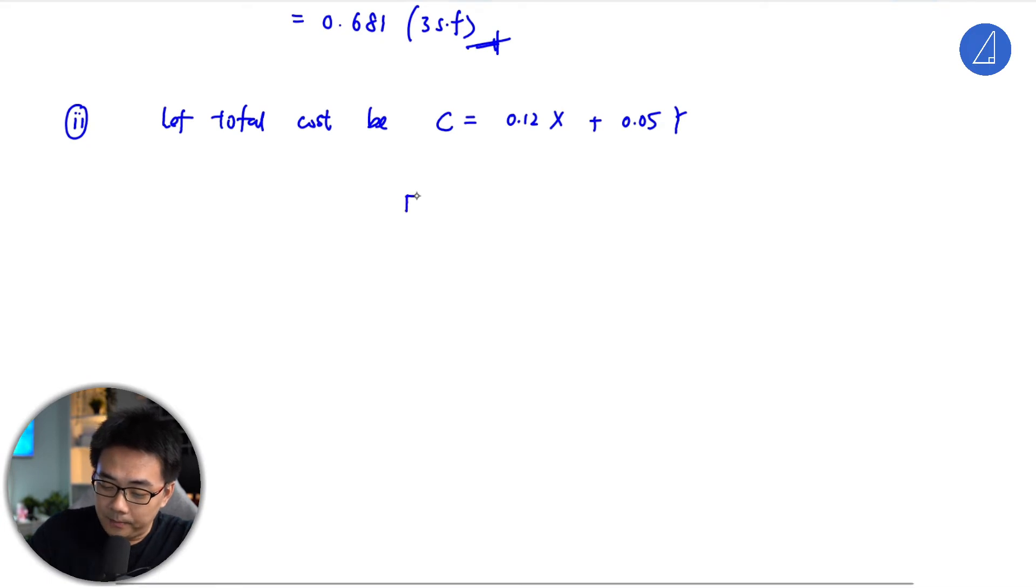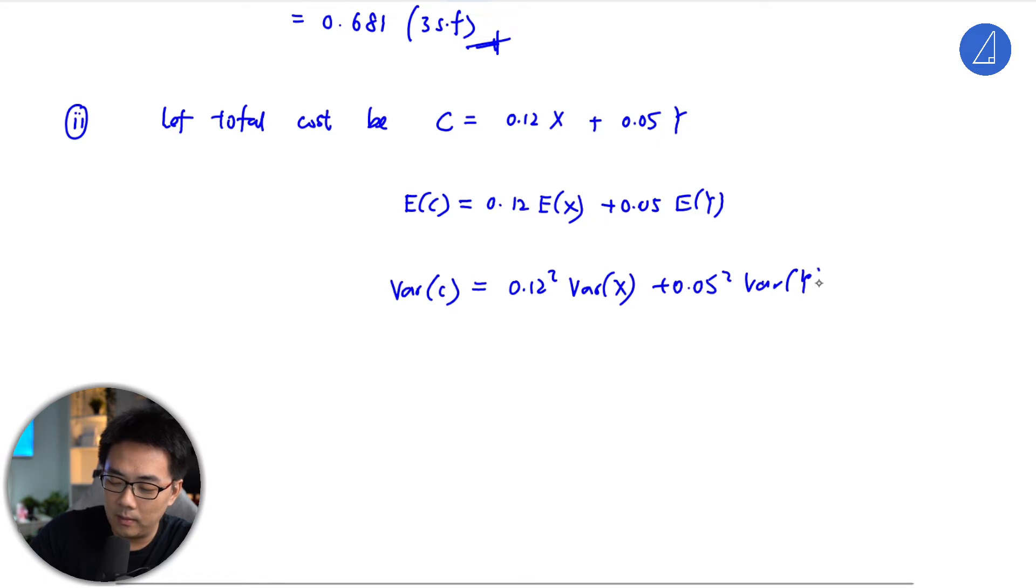So in other words, expectation of C is 0.12 expectation of X plus 0.05 expectation of Y. And variance of C is 0.12 squared variance X plus 0.05 squared variance Y.